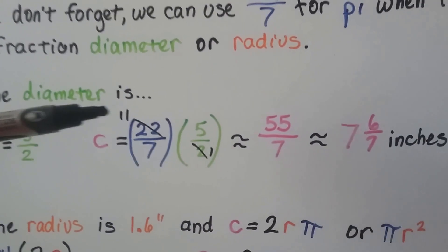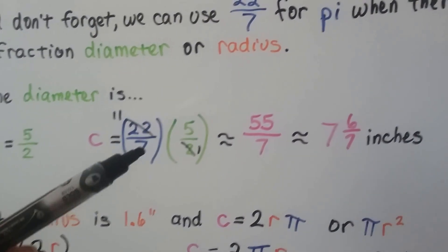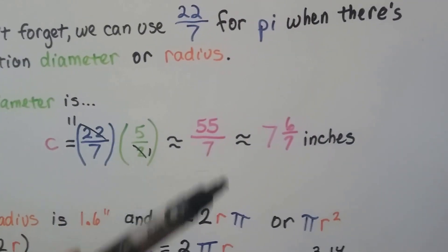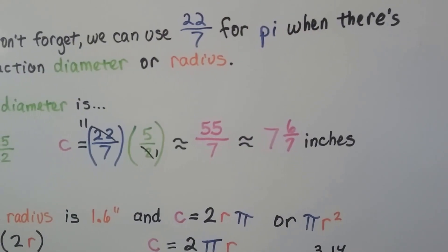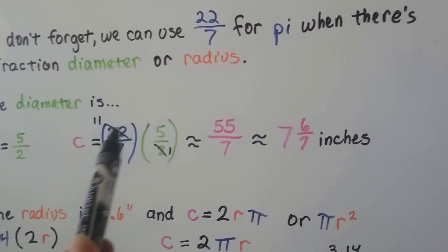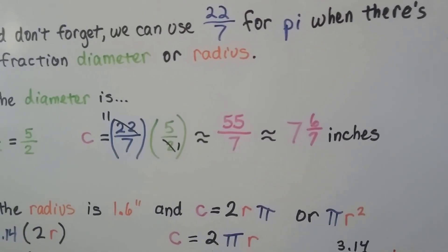Then we don't have to reduce so much. Then we do 11 times 5 is 55 and 7 times 1 is 7. We have 55 sevenths, which is approximately 7 and 6 sevenths inches. So remember, because we're dealing with that pi, it's approximate.